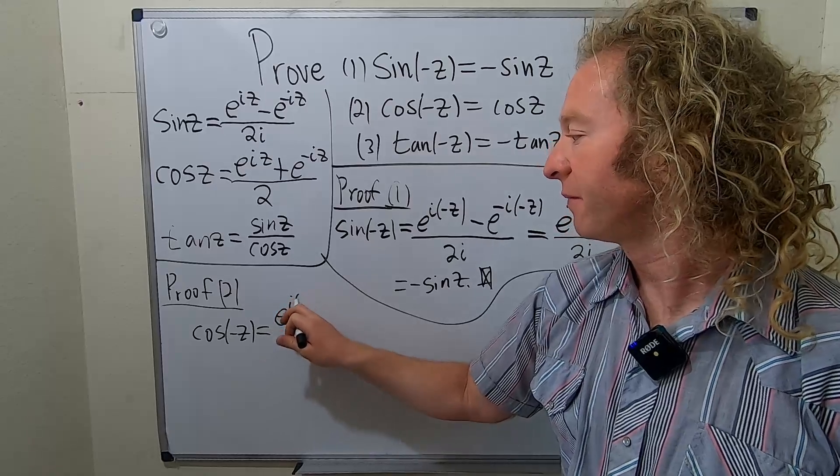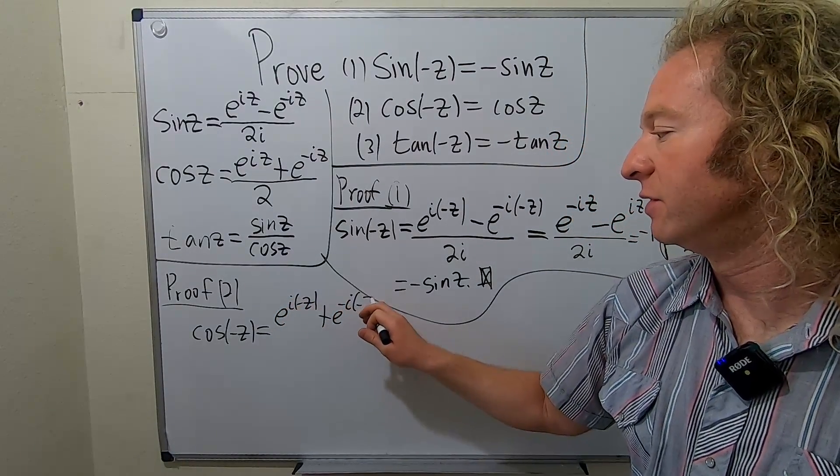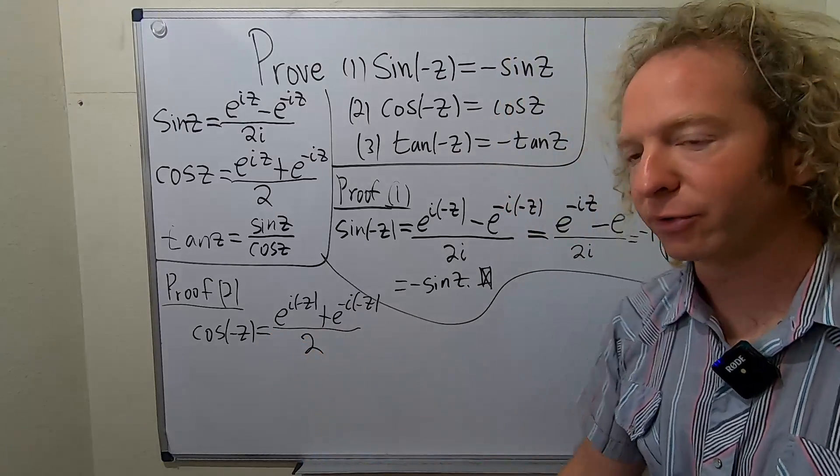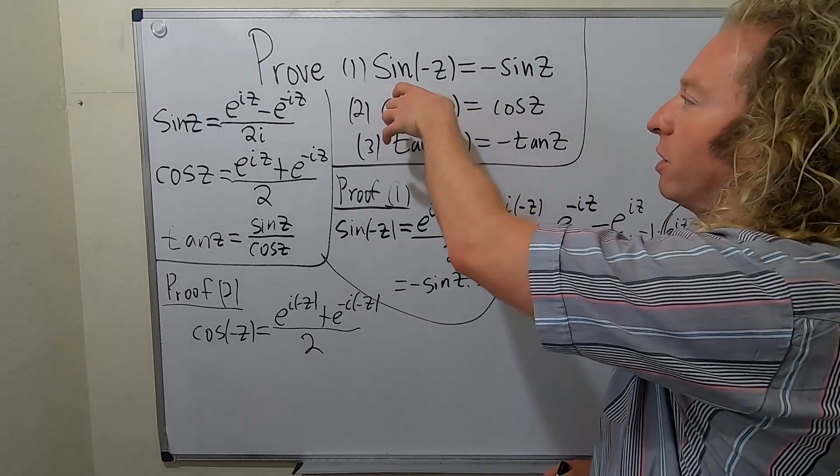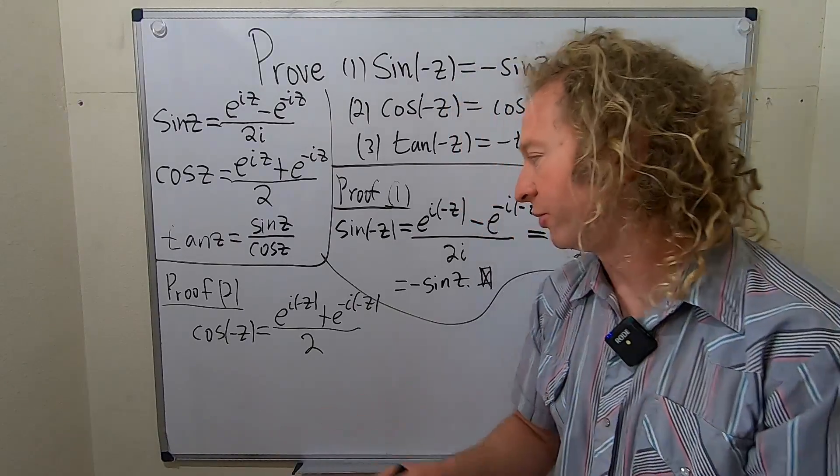This is e to the i negative z plus e to the negative i negative z all over two, right? It's a natural thing to do. You start with one side and then you just carefully show that it's equal to the other.